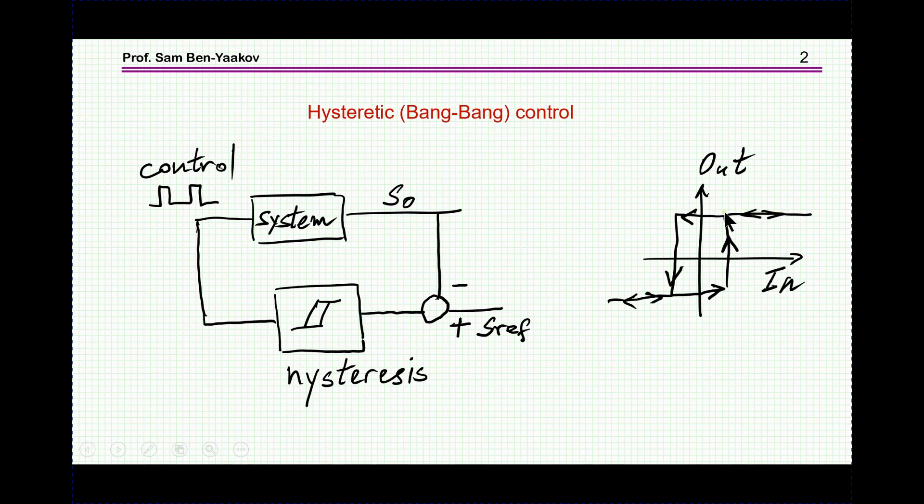When in is going back then it has to go to a lower value in order to kick back to the lower output value. So this is very typical for a hysteresis control element and the hysteresis could be around zero or around any other quiescent point depending on the application.